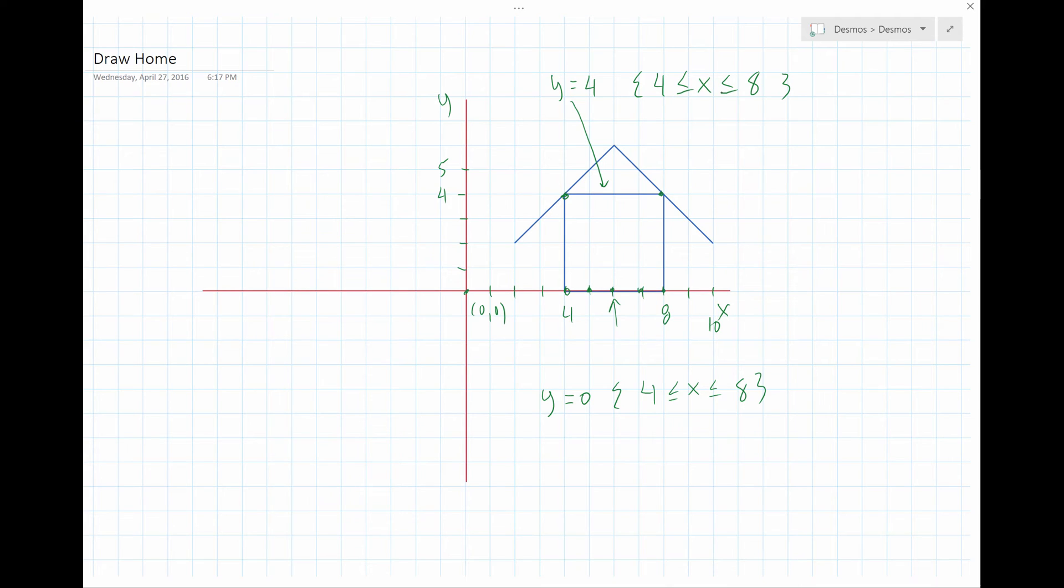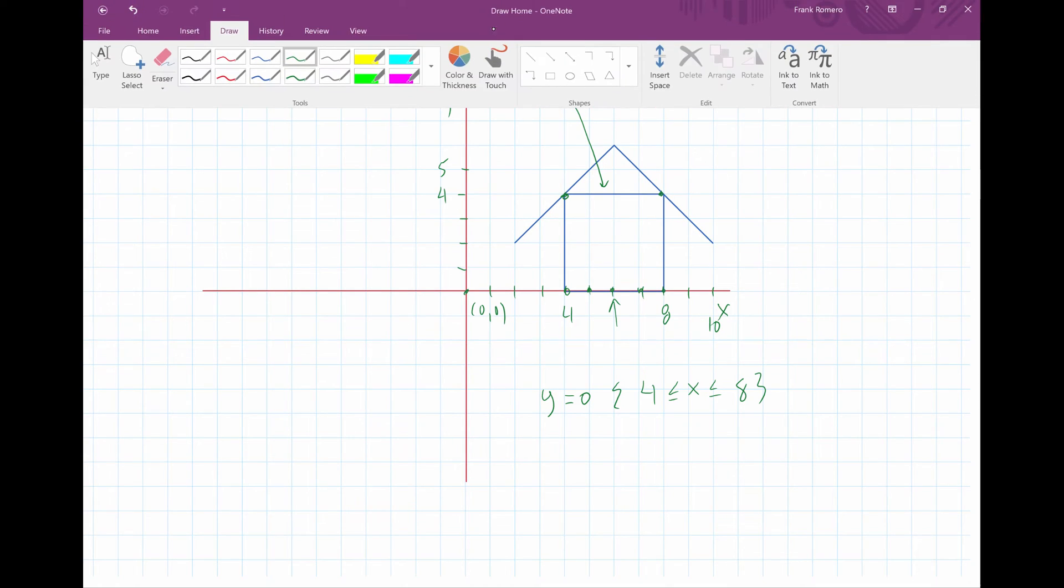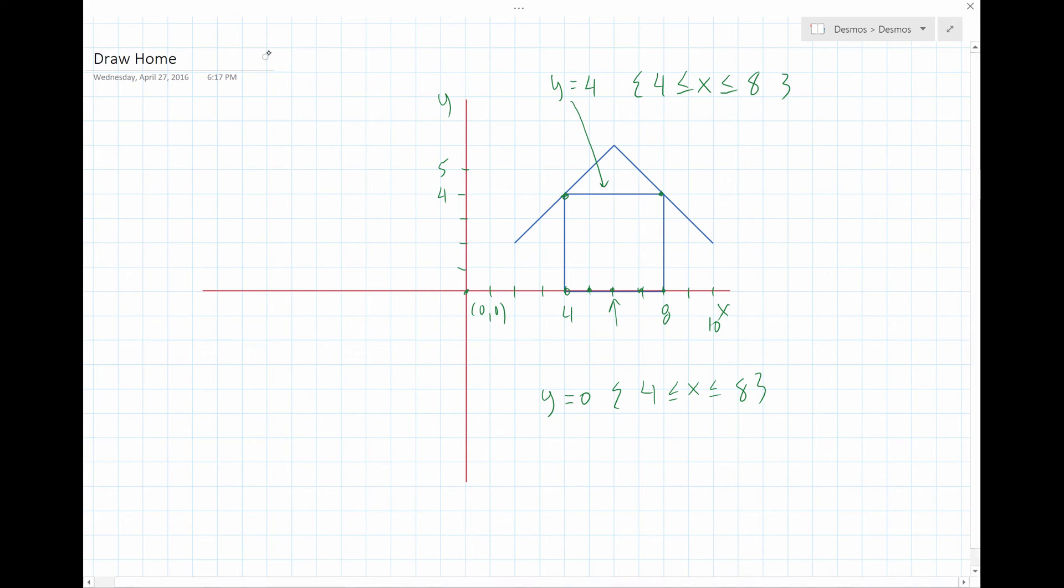And now, let's change colors. Let's do blue or something. Let's deal with these. Let's deal with that one first. That's vertical or horizontal? It's vertical. Right? So vertical means it's going to be X is equal to something. X is equal to 8. And it starts down here at 0, 1, 2, 3, and 4. Right? So it goes from 0 to 4. It's bounded that way. Okay.